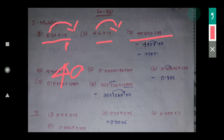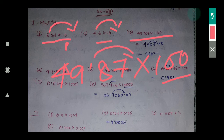49.87 into 100 is given. How many zeros? 2 zeros. That means it will shift 2 places to the right side. So 4, 9, 8, 7 — you can put 0 or you can simply tell the answer 4987.